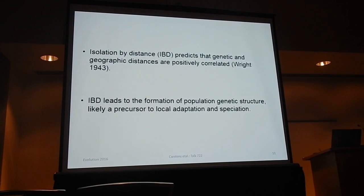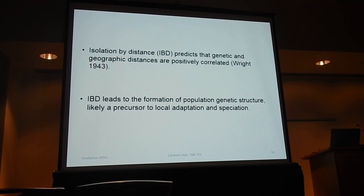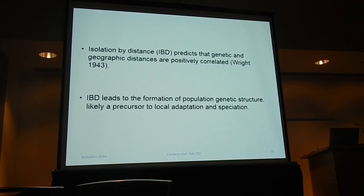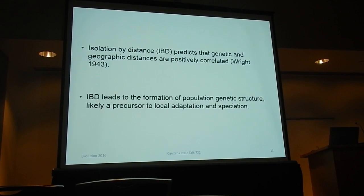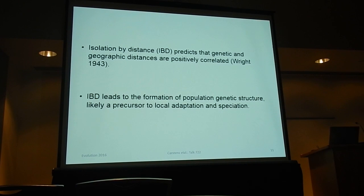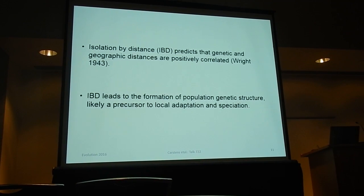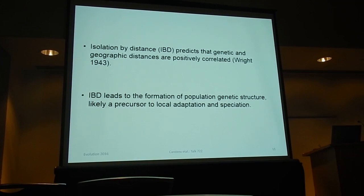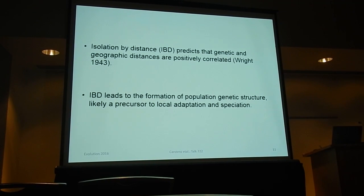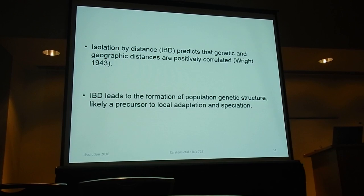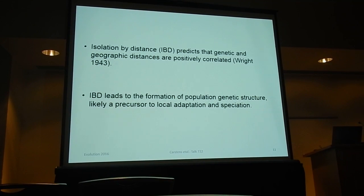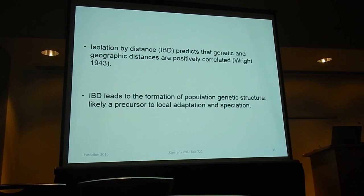Why IBD? Isolation by distance is a really important idea in population genetics — the idea that there's a correlation between how separated individuals are geographically and how genetically distant they are. Sewall Wright mentioned this during the modern synthesis. Isolation by distance is an important process leading to population genetic structure, and when species are structured genetically, things like local adaptation and sometimes speciation happen. So this is a good first step.